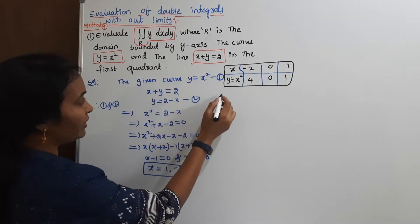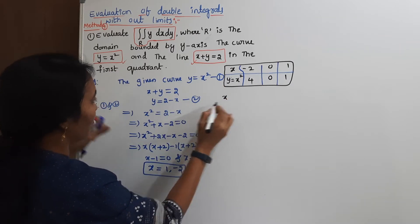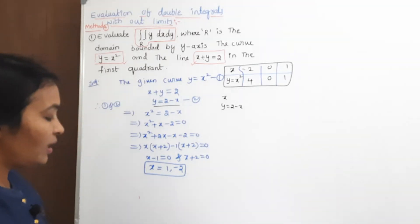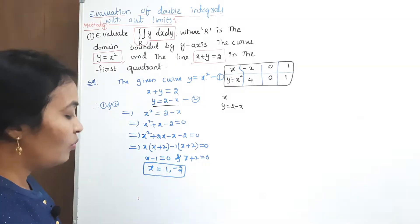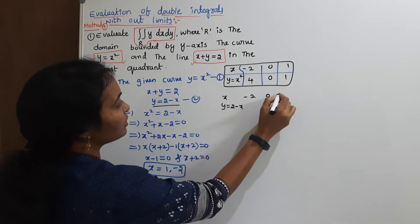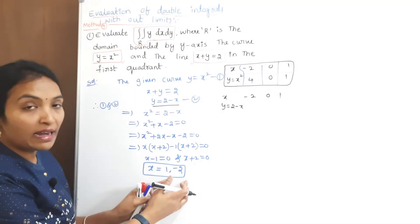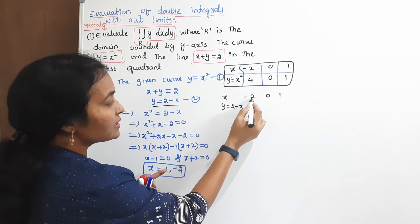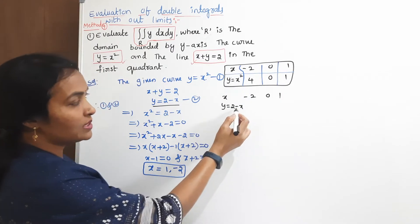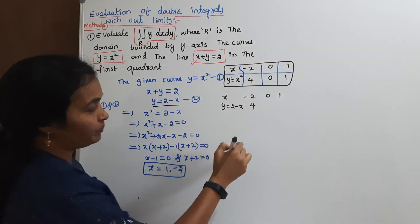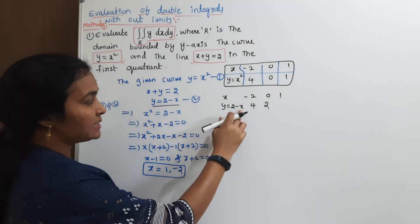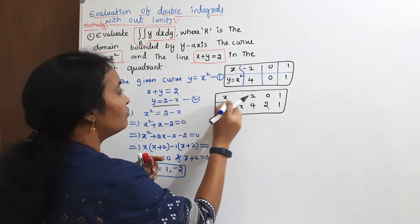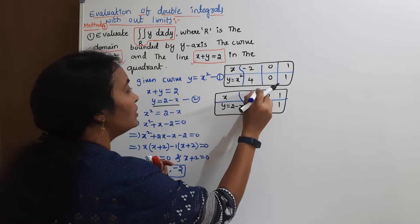Consider the second line equation. We need to write it in terms of y: y equals 2 minus x. Using the same x values — minus 2, 0, and 1 — substituting: when x equals minus 2, y equals 4; when x equals 0, y equals 2; and when x equals 1, y equals 1. You now have two tables. By using these two sets of values, we need to draw a graph.